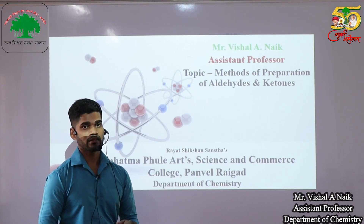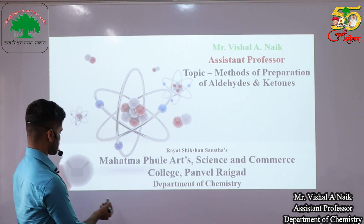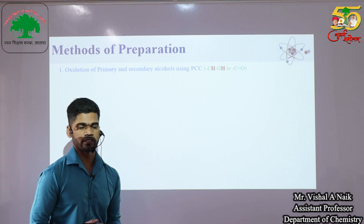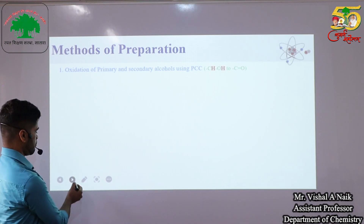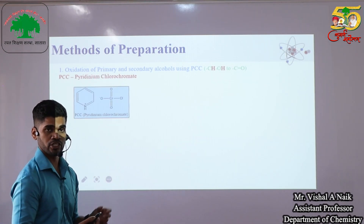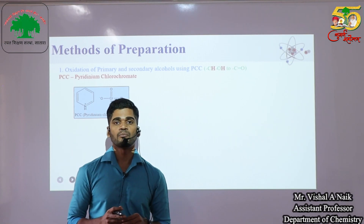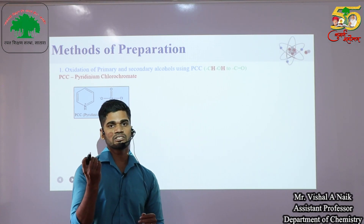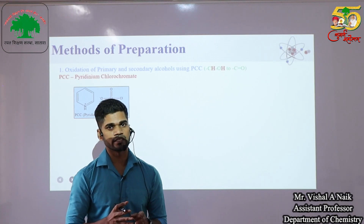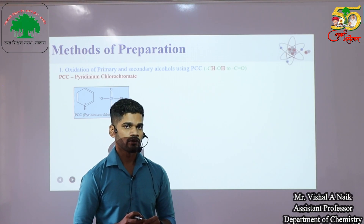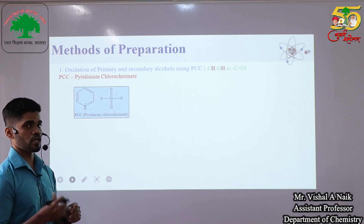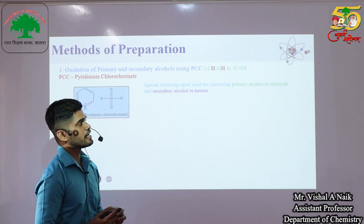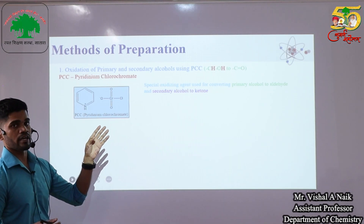The first method used for preparation of aldehydes and ketones is the oxidation of primary and secondary alcohols by using PCC. PCC is a strong oxidizing agent known as pyridinium chlorochromate, which is synthesized by reaction of pyridine, hydrochloric acid, and chromium trioxide. We get an orange colored solid called PCC, which is generally used for oxidation purposes.